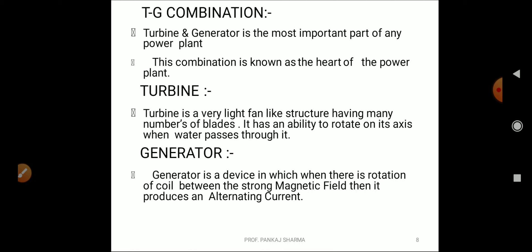That shaft is mounted on the other side with generator. Generator is a device in which when there is rotation of coil between the strong magnetic field, it produces electrical alternating current. Generator is very much known to electrical students. It works on the principle of Faraday's laws of electromagnetic induction. There is input RPM, there is flux cutting the conductors, and there is induced EMF. I'm telling you very briefly and shortly. This is not exact from electrical point of view but I'm giving a hint what is exactly happening.